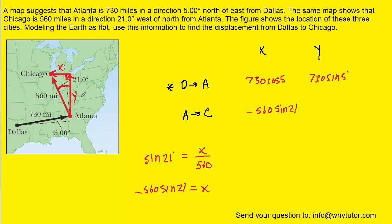The Y component is going to use the cosine: 560 times the cosine of 21. That's cosine because the Y component is adjacent to the 21-degree angle. The Y component is pointing straight up, so we leave it as a positive value.